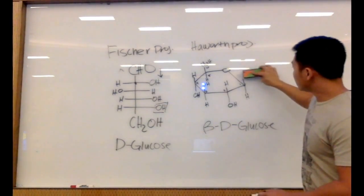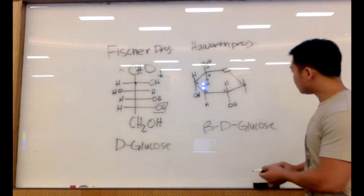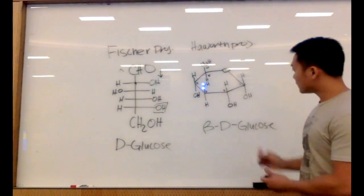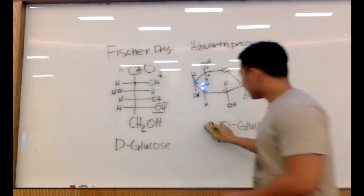And then for alpha, we just do that vice versa. I drop the group down, hydrogen group going up. Now we've got this as alpha.